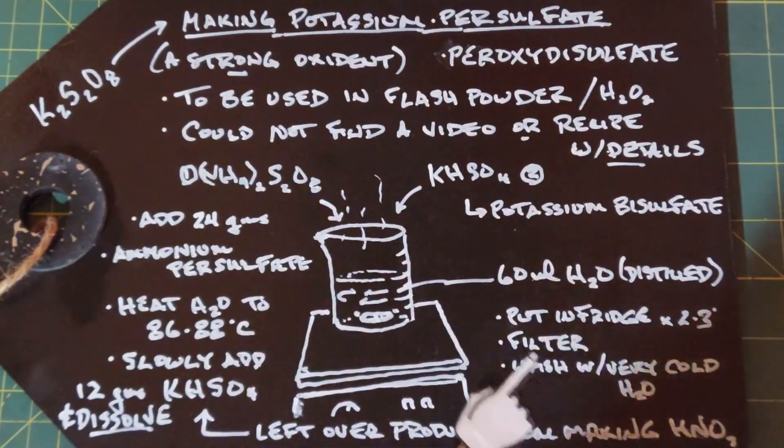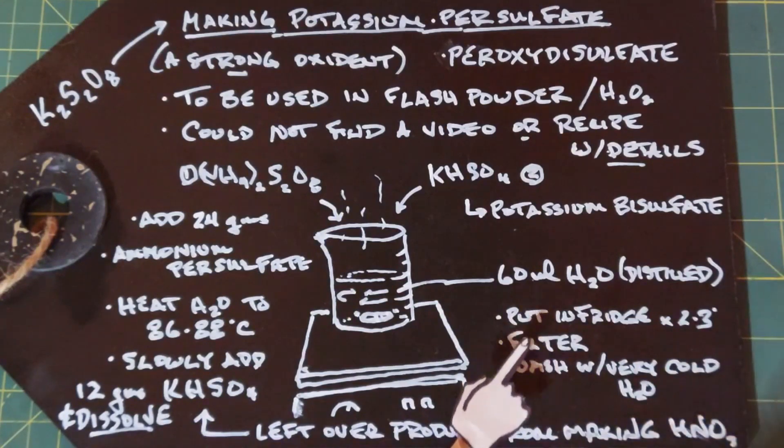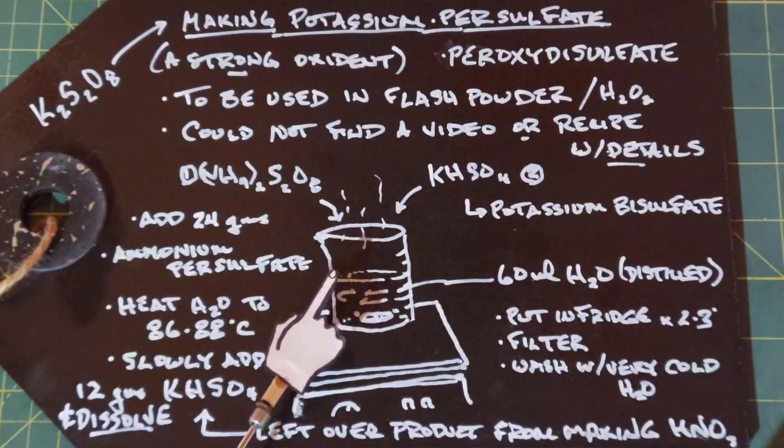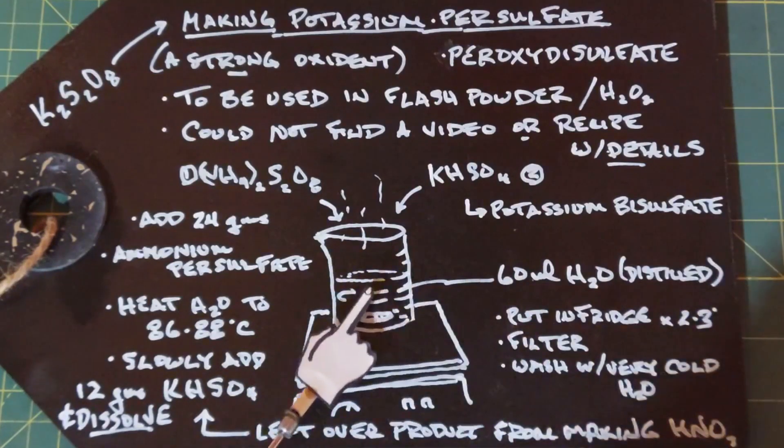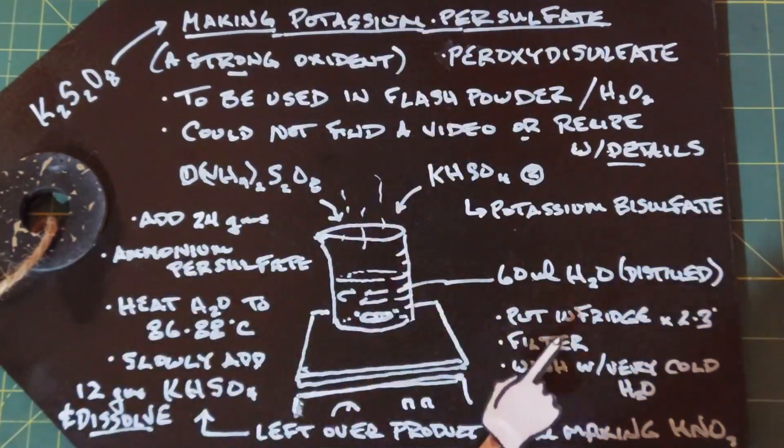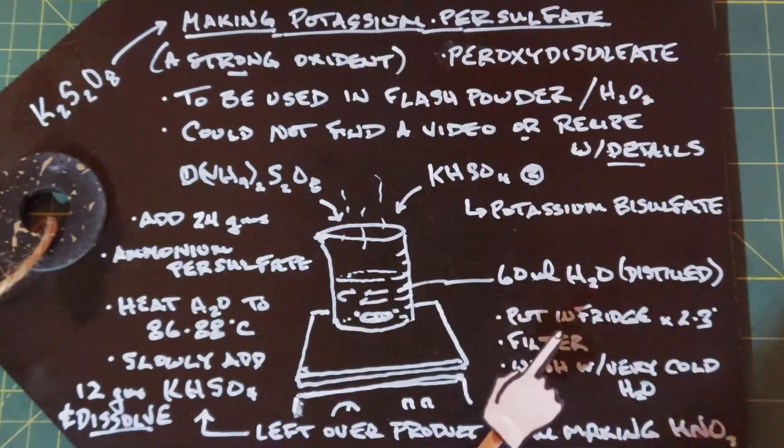I then filtered them. I used acid filter paper so that it wouldn't dissolve. I don't know what would happen if you used regular filter paper, but because of the strong oxidant nature of the potassium persulfate, I did use acid-resistant filter paper.